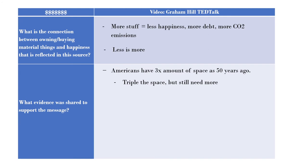First, he talks about how Americans have three times the amount of space as they did 50 years ago, and even though they've tripled the space, they still need more — referencing storage units and larger homes. He asks listeners to consider when they've been somewhere with less space and fewer materials: in a hotel room, camping, or in a college dorm — all very small spaces requiring very few things. He argues that this gave you freedom and time to do the things you really enjoy, connecting to the idea that less is more.